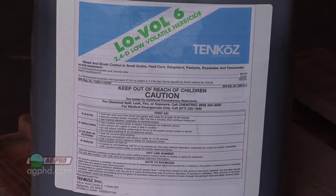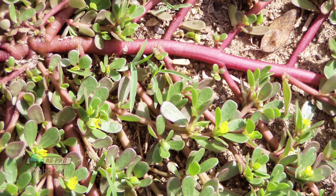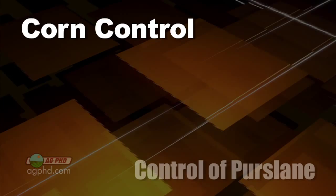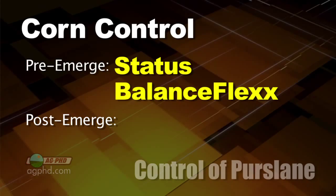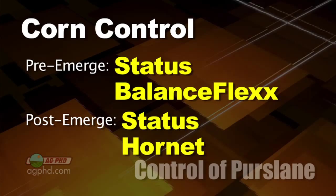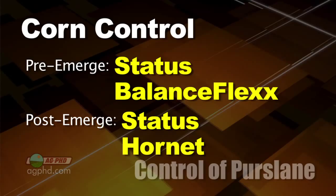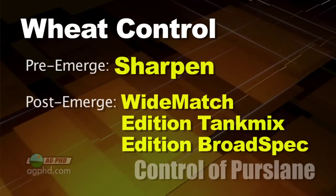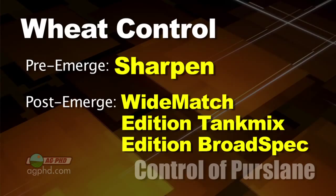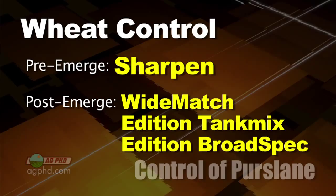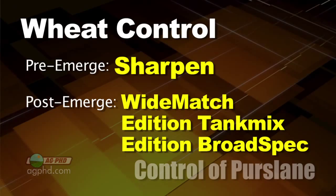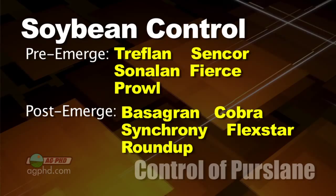Roundup has been very good at controlling purslane, and because it stays low to the ground, a good crop canopy often wipes it out. In corn, I like Status as a burndown product; Balance Flex does a nice job on purslane as well. Post-emerge, Status is the best option, but Hornet does a nice job too — just don't use Sure Start or Triple Flex down if you're using Hornet post-emerge since Hornet is in those pre-emerge herbicides. In wheat, Wide Match is better than Husky on purslane, and is really good on kochia and thistle. Adding Broadspec or a tank mix with Wide Match helps. In soybeans, post-emerge Basagran and Synchrony can work; Roundup does a nice job, and adding Cobra or Flexstar with it is good. Pre-emerge, I like Sencor and Fierce on this particular weed.